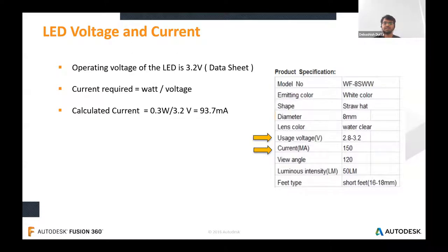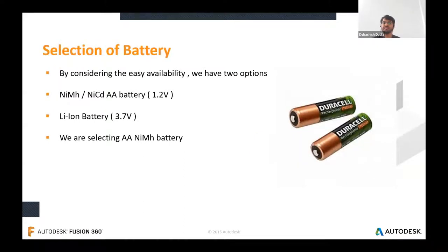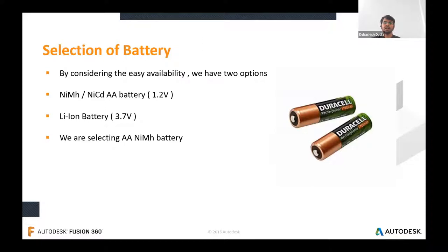To design a LED circuit, the main parameters are LED voltage and current. The forward voltage for this LED is 2.8V to 3.2V and the current requirement is maximum 150mA. For battery selection, we have two options: double-A nickel metal hydride or nickel cadmium, or 3.7V lithium-ion battery. By considering availability and safety, I am selecting the double-A nickel metal hydride battery as the reference.